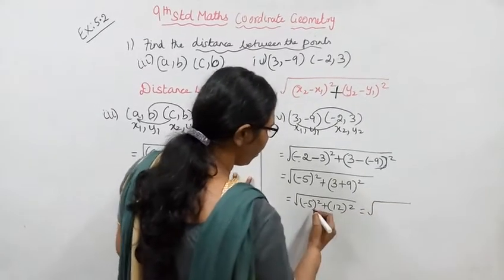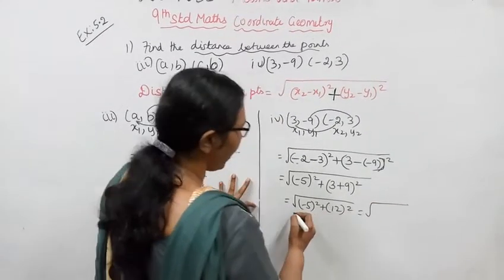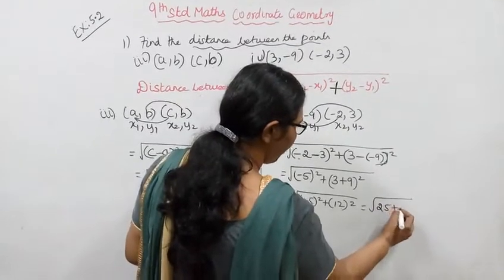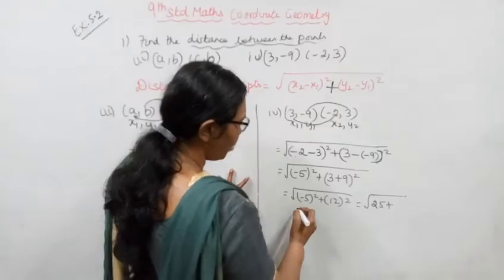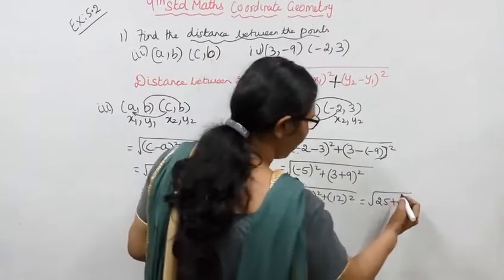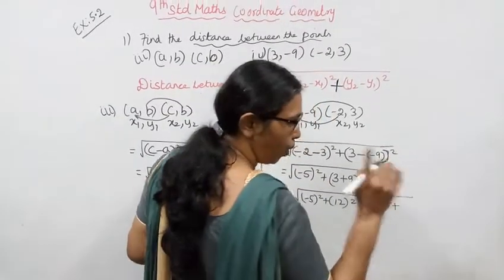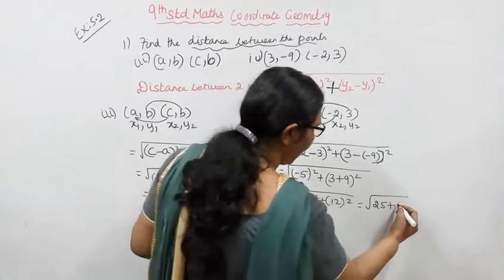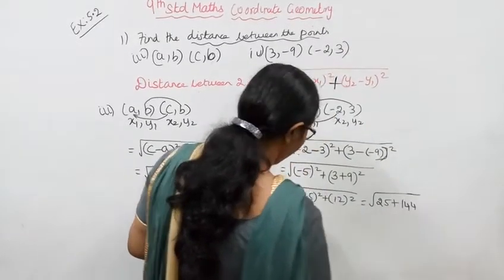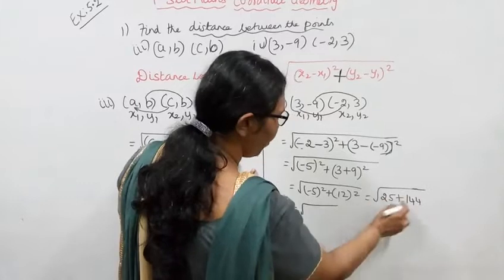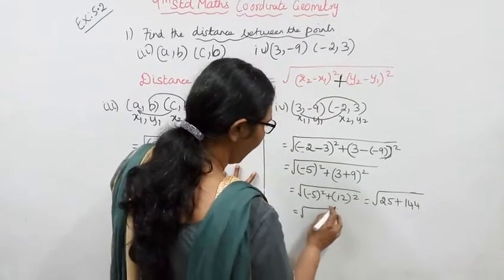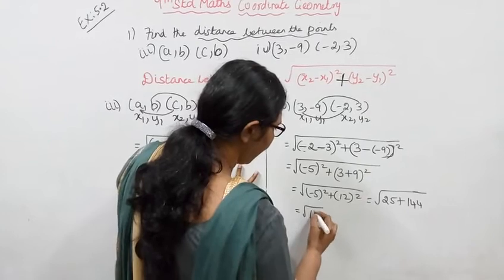That is equal to square root of: (minus 5) whole square equals 25 — minus 5 into minus 5 is plus 25. And 12 squared: 12 into 12 equals 144. That is equal to 25 plus 144, which gives 169.